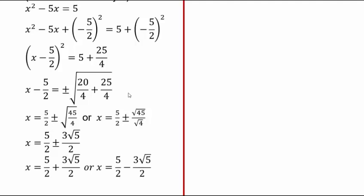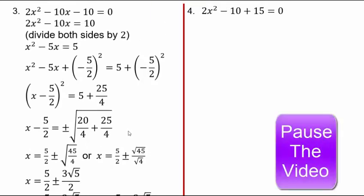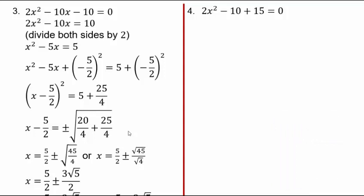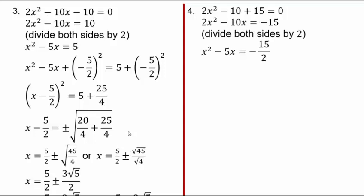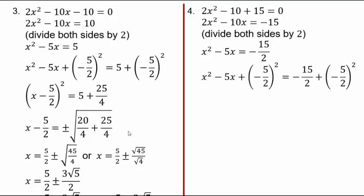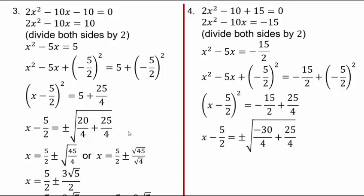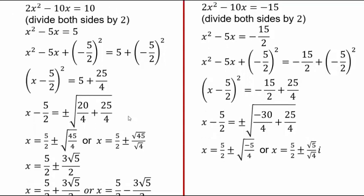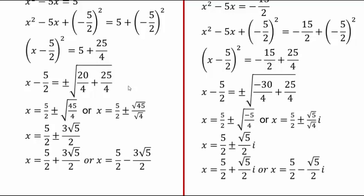For the next example, divide both sides by 2. This time we get -15/2 on the right side. Add (-5/2)² = 25/4 to both sides. Create common denominators and combine. The solution is x = 5/2 ± (√5/2)i, giving two complex solutions x = 5/2 + (√5/2)i and x = 5/2 - (√5/2)i.